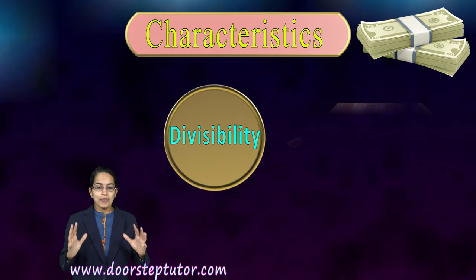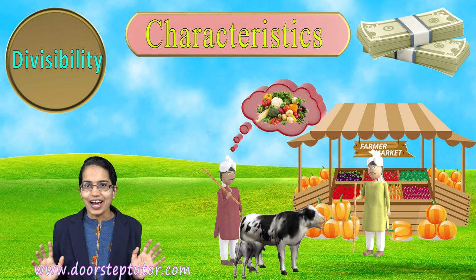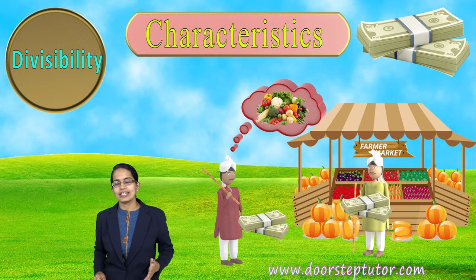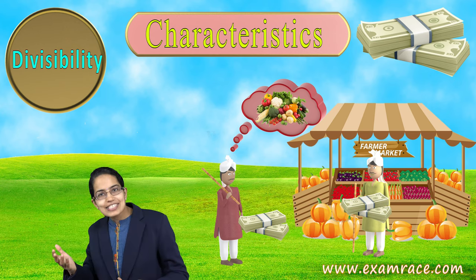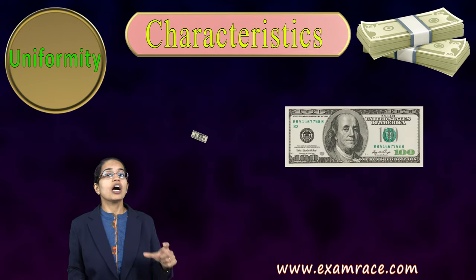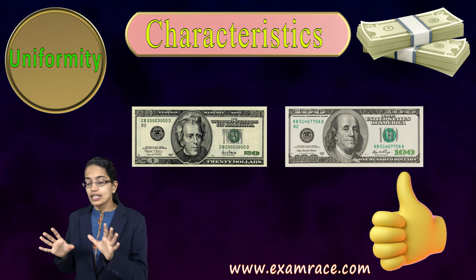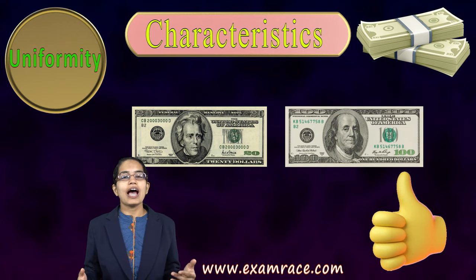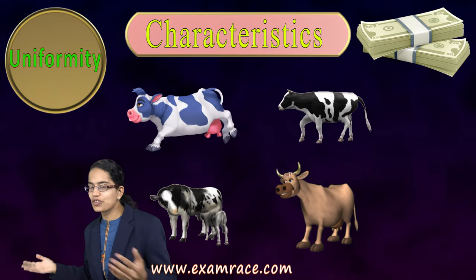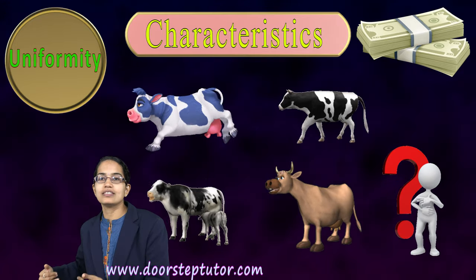The next characteristic is divisibility. Previously in the barter system, if you had cattle or a cow to barter, you could not divide it — you'd have to hand over the whole animal. But with notes and coins, divisibility becomes much easier. Next is uniformity. A hundred dollar note and a twenty dollar note appear uniform in shape, size, and appearance, making them easy to comprehend. In contrast, each cow would be different, making valuation difficult.